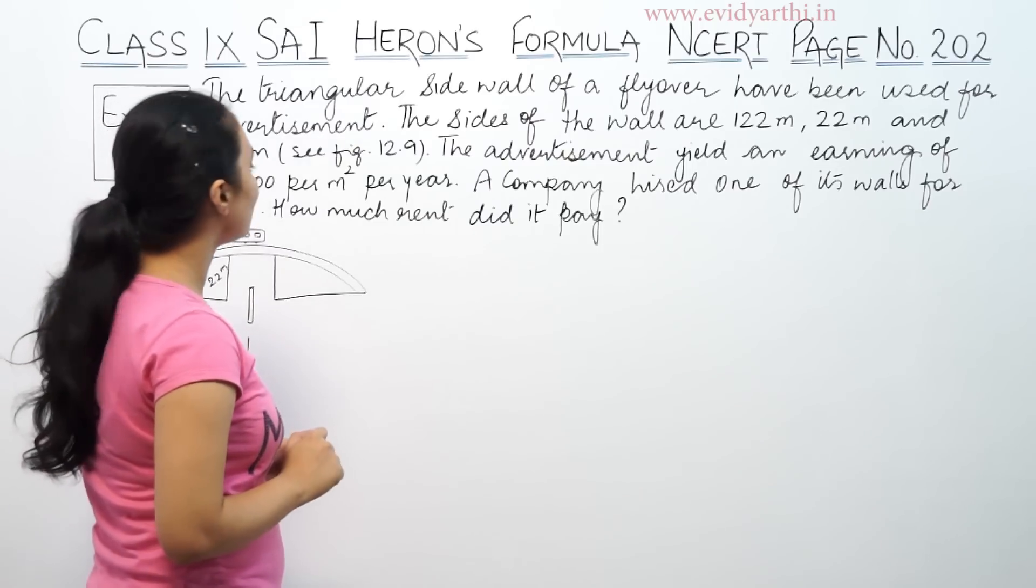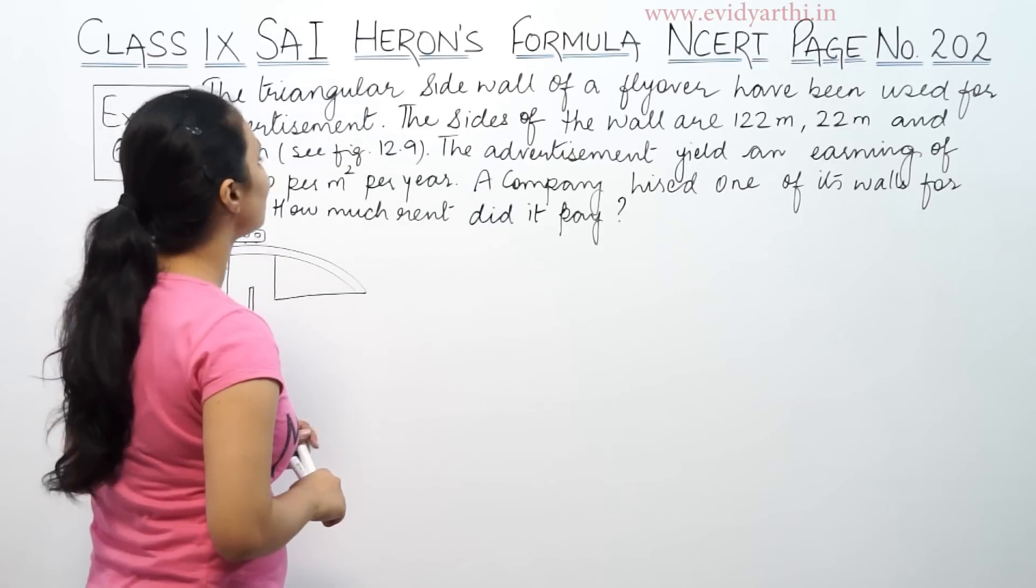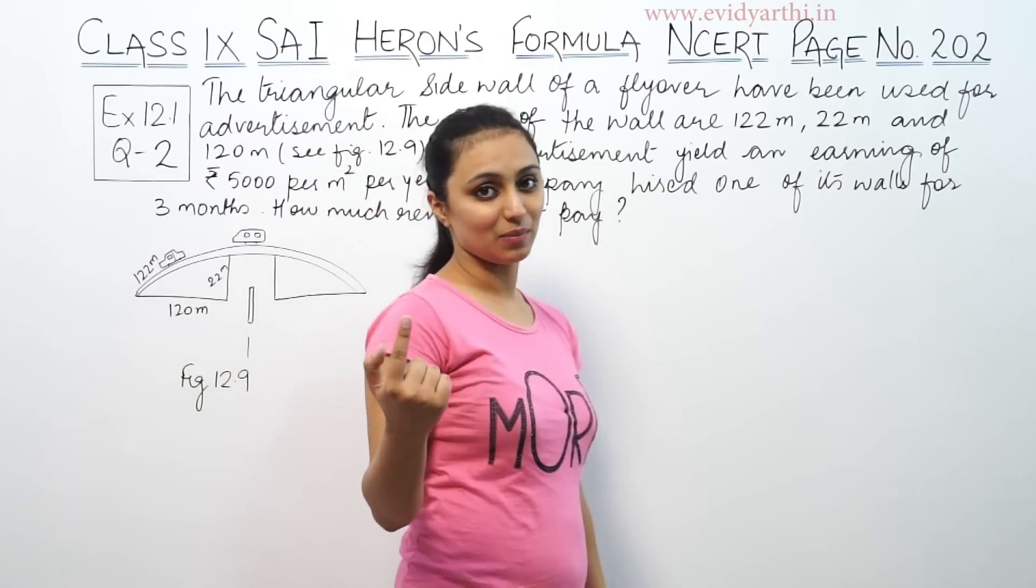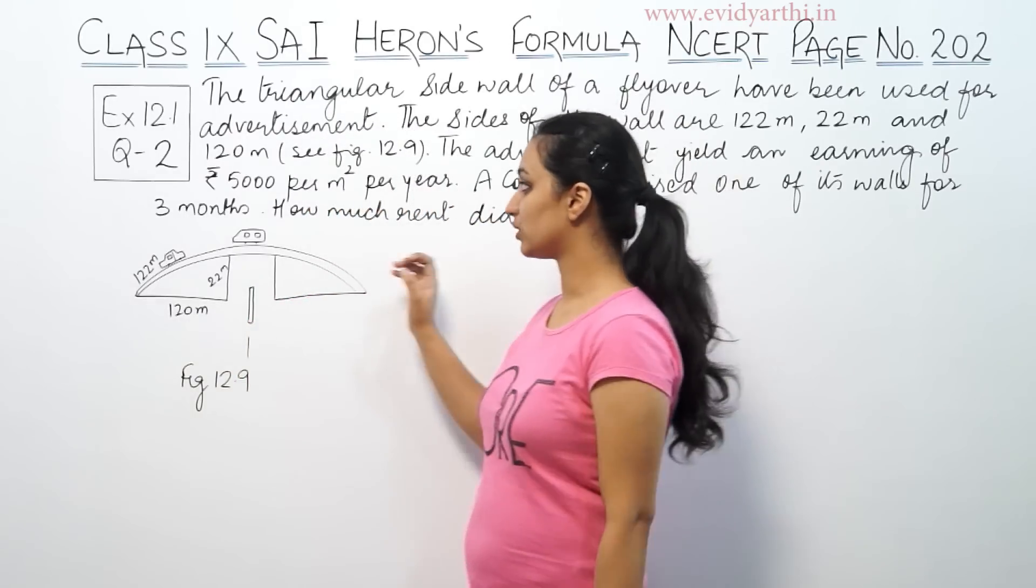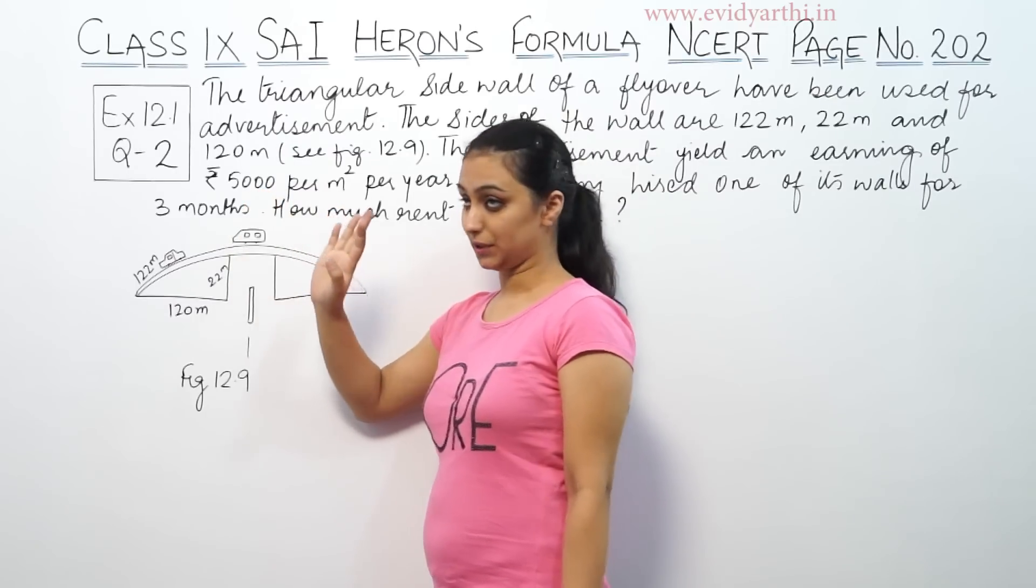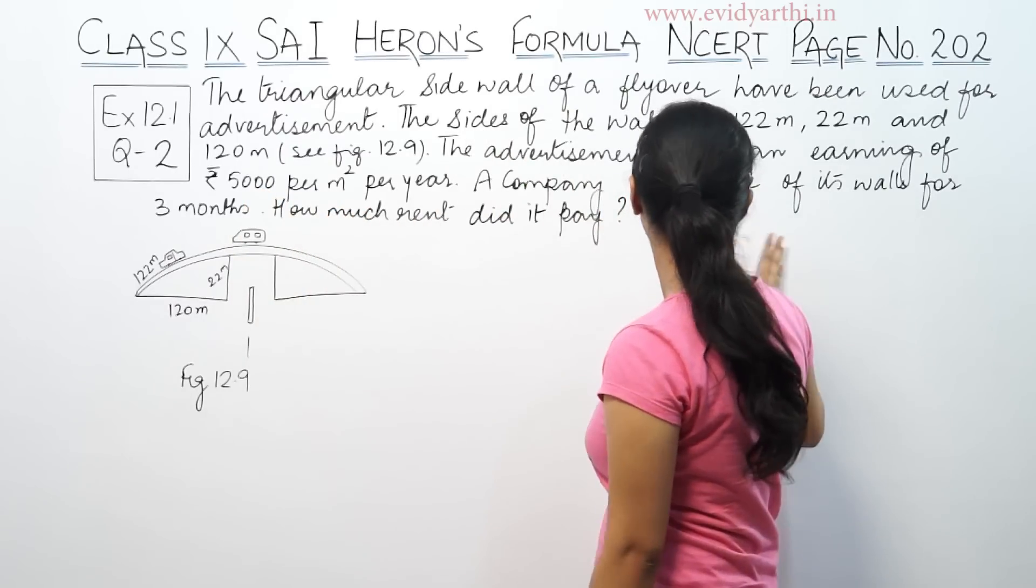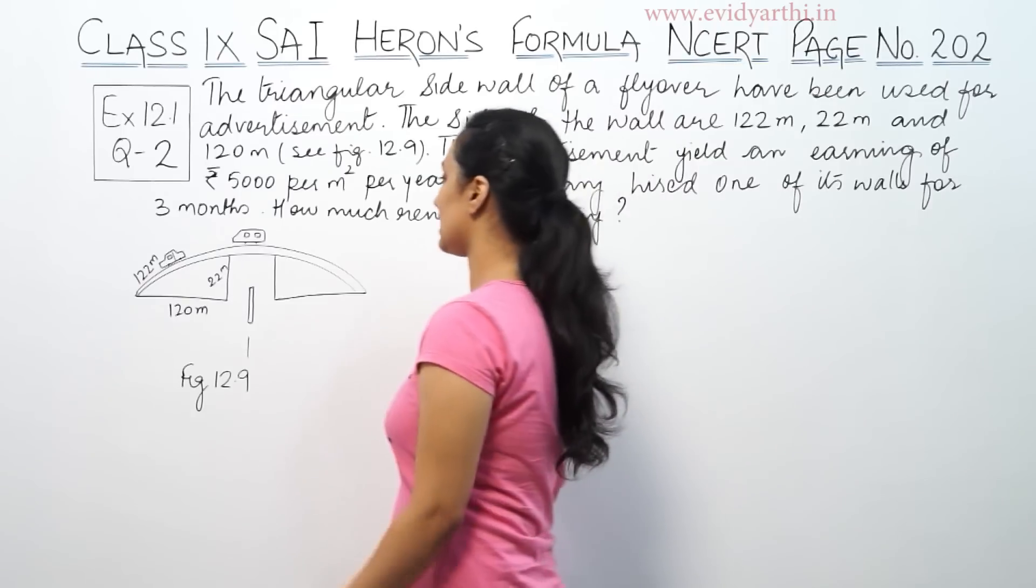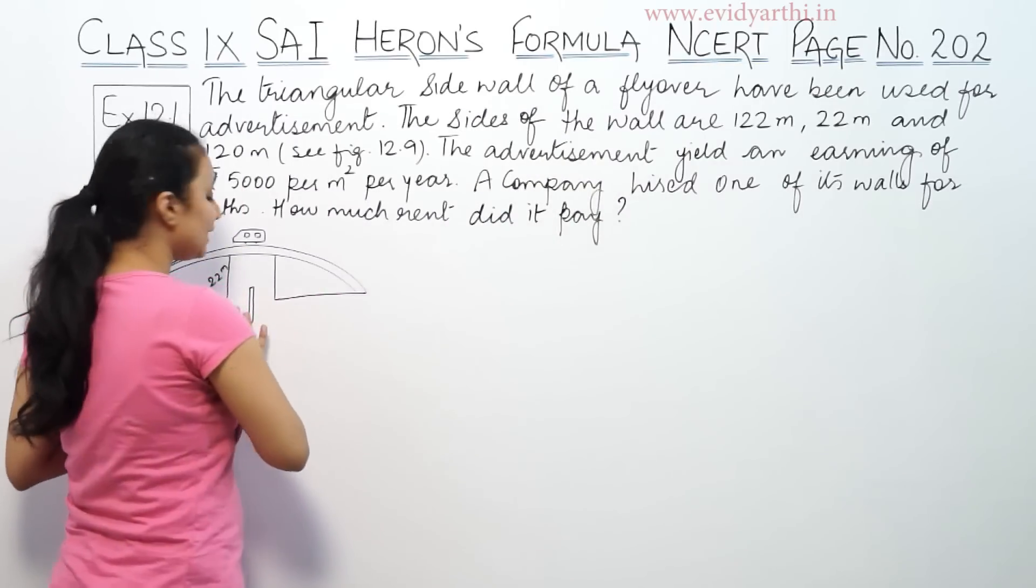The advertisement yields an earning of 5000 rupees per meter square per year. If you use the area at 5000 rupees per year, a company hired one of its walls for three months.